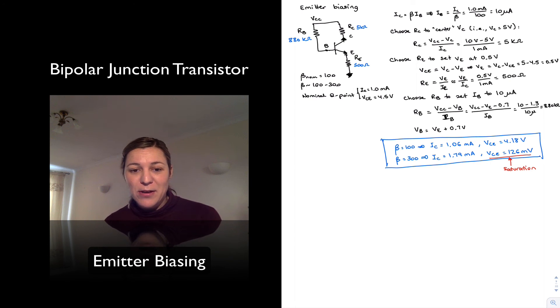Now, you may have heard that the emitter biasing configuration was good because it was robust to beta variations. And so this contradicts a little bit what you may have heard or thought you heard. The reason for that is, it is true, emitter biasing configuration is actually robust to beta variations.